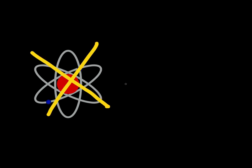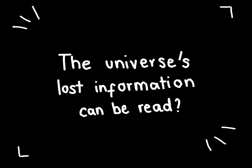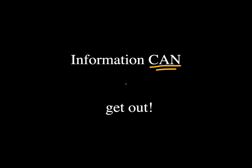Is our idea of quantum mechanics wrong? Or maybe black holes don't actually destroy information? But if information can escape from a black hole, that'd be pretty damn cool. With the recent understanding of entanglement entropy, we've actually realized that information can get out of a black hole.